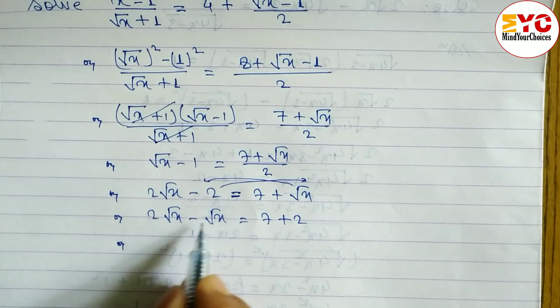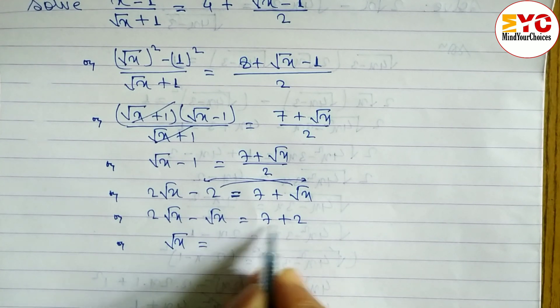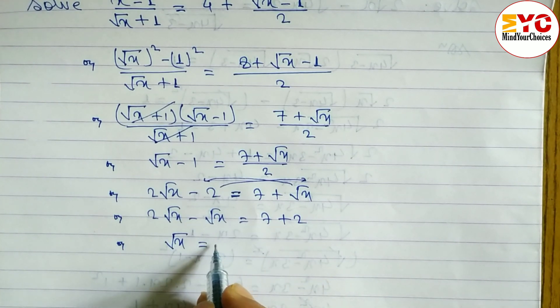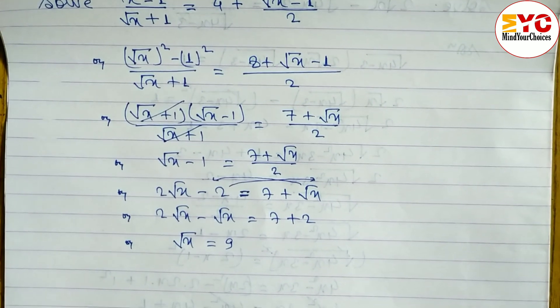Subtracting, 2√x - √x gives us √x, and 7 + 2 = 9, so √x = 9. Now we need to find the value of x.